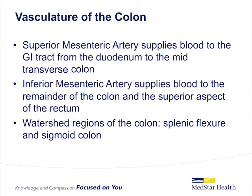The vasculature of the colon is thought to play an important role in the development of ischemic colitis, as an episode of hypoperfusion is thought to precede its development. The superior mesenteric artery supplies blood to the gastrointestinal tract from the duodenum to the mid-transverse colon. The inferior mesenteric artery supplies blood from the mid-transverse colon to the superior aspect of the rectum. The internal iliac arteries communicate with the inferior mesenteric artery via the superior and middle hemorrhoidal arteries. In addition to this blood supply, there is also collateral blood flow for the colon.